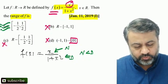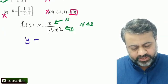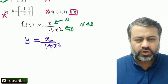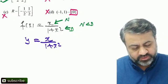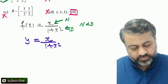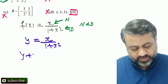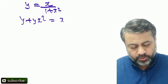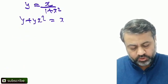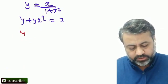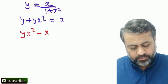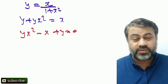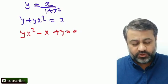In the traditional method, we set y = x / (1 + x²) and cross multiply to simplify. Cross multiplying gives y + yx² = x. Rearranging into a proper quadratic equation form, we get: yx² - x + y = 0.